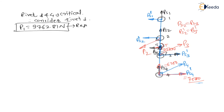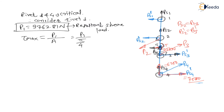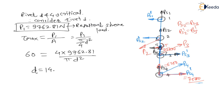The resultant load on rivet 1 is P1 = 9762.81 N, which is the resultant shear load. The maximum shear stress is given as 60 N/mm². Using the formula: shear stress = P1 / (π/4 × D²), we get 60 = (4 × 9762.81) / (π × D²). Solving for D gives a diameter of 14.39 mm. This is the answer. Thank you dear students. In the next lecture we will see one more numerical on riveted joint.